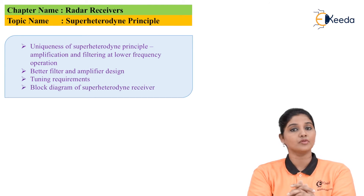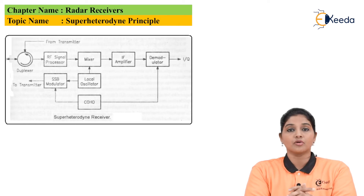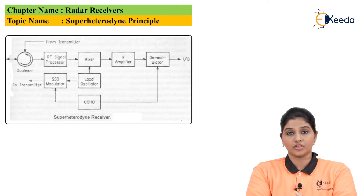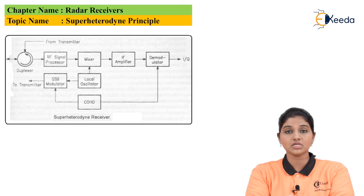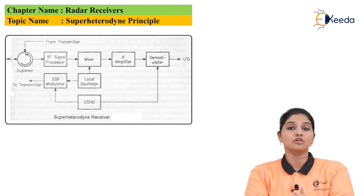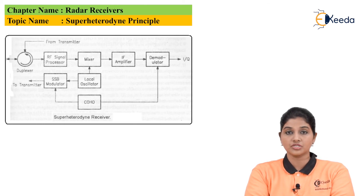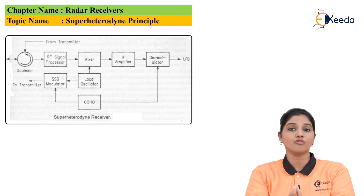The super heterodyne receiver performs the main function of amplification and filtering at an intermediate frequency, which has a value less than the received echo signal frequency and the interference frequency. This is considered one advantage of the super heterodyne receiver, making it possible to design with low cost. Another advantage is that tuning can be easily done by changing the frequency of the local oscillator.